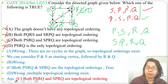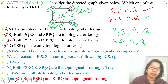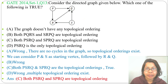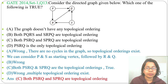By both the DFS-based algorithm and the source removal algorithm, there are exactly two topological orderings for this graph: PSRQ and SPRQ. I've already discussed both algorithms in detail — go through my lectures to understand them fully. If this lecture was helpful, please like and subscribe. Thank you.